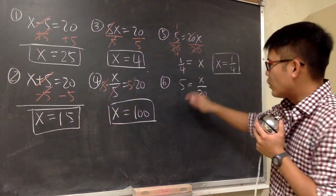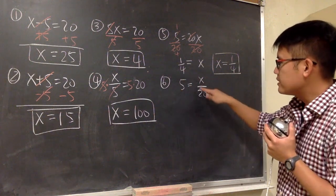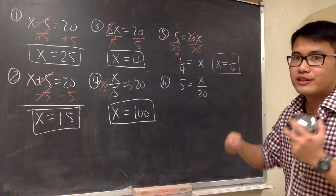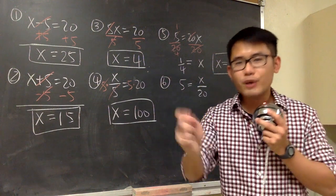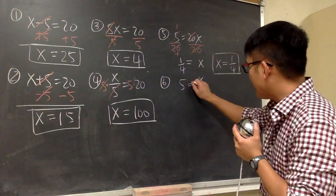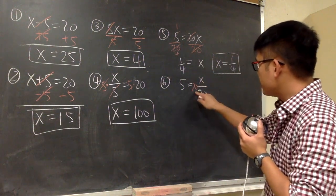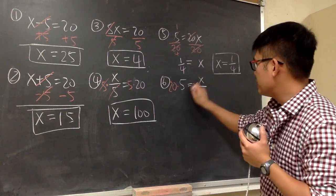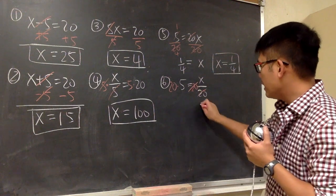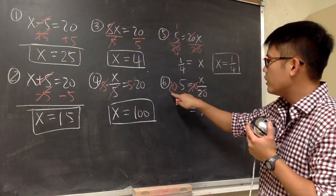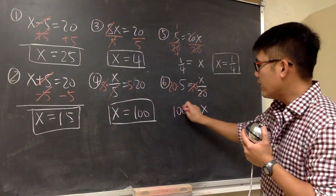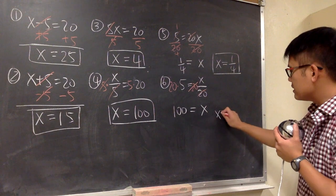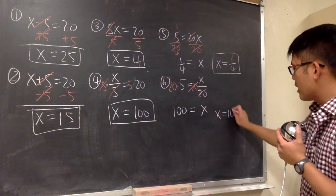Now let's look at the last one. We have 5 is equal to x over 20. x is here, and x is divided by 20, so we should multiply. Multiply both sides by 20 — put down 20 in the front — so this and that cancel. Then we get x is equal to 20 times 5, which is 100. I would like to present the answer as x is equal to 100.